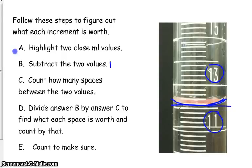Step B says subtract the two. So 13 milliliters minus 11 milliliters equals 2 milliliters. Count how many spaces are between. So we have to start here. This is our 11 mark right here. And we have 1, 2, 3, 4, 5.